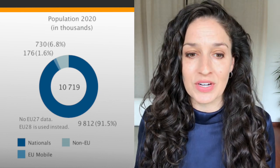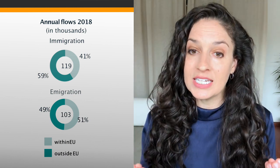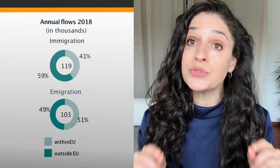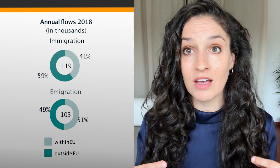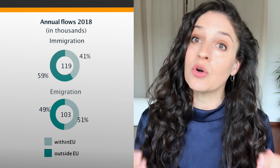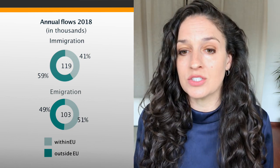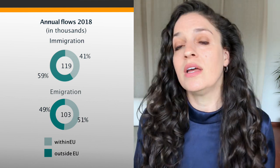Now let's look at flows — that stock figure was for 2020. Looking at annual flows for 2018: around 59 percent of people who entered Greece that year were from outside of the European Union and 41 percent were from within the EU. If we look at emigration — people who left Greece — it's quite split: 49 percent went outside the EU and 51 percent went within the EU.